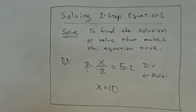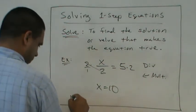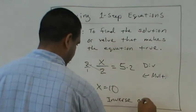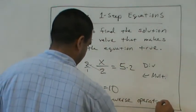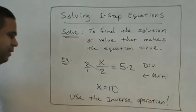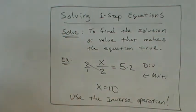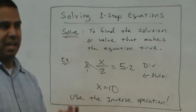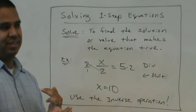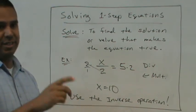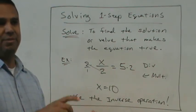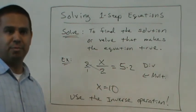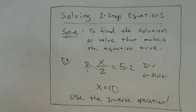Okay. So the big secret here is to do what? Use the inverse operation. So for subtracting, you're going to add. If you're adding, you're going to subtract. If you're multiplying, you're going to divide. And if you're dividing, you're going to multiply. That's it. Simple.